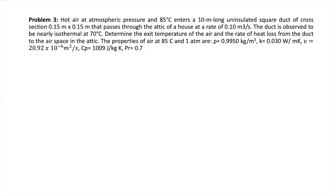Your first step is to get the Reynolds number to check which Nusselt correlation will fit for solving this convection problem. You need to realize that you have a square duct, so it's different than a circular cross-sectional area. That means you need to first get a hydraulic diameter for this square duct, and then use the hydraulic diameter to get the Reynolds number.